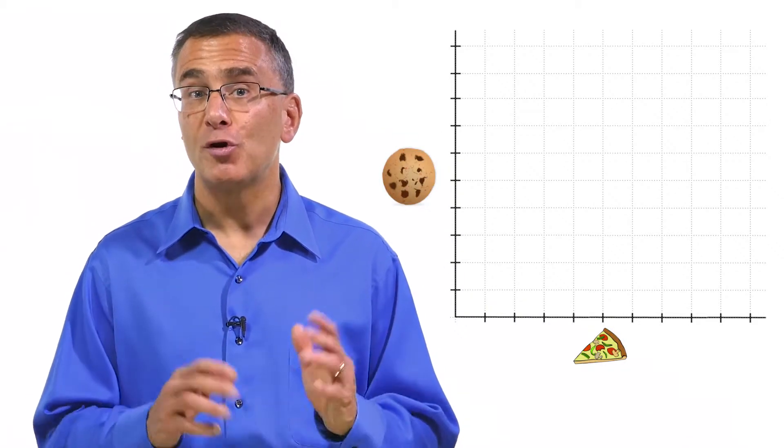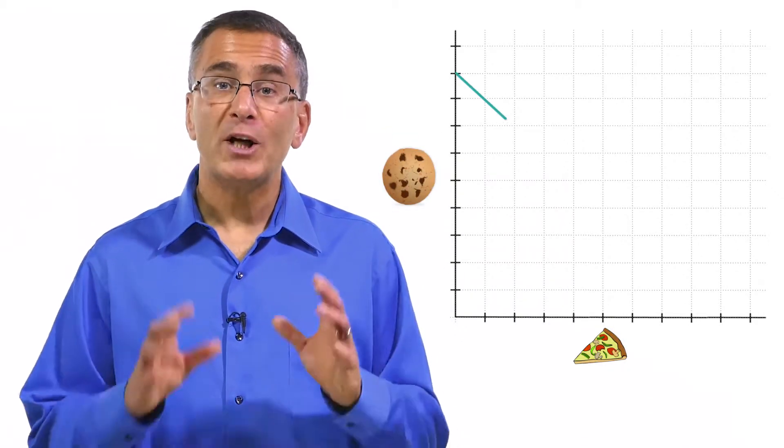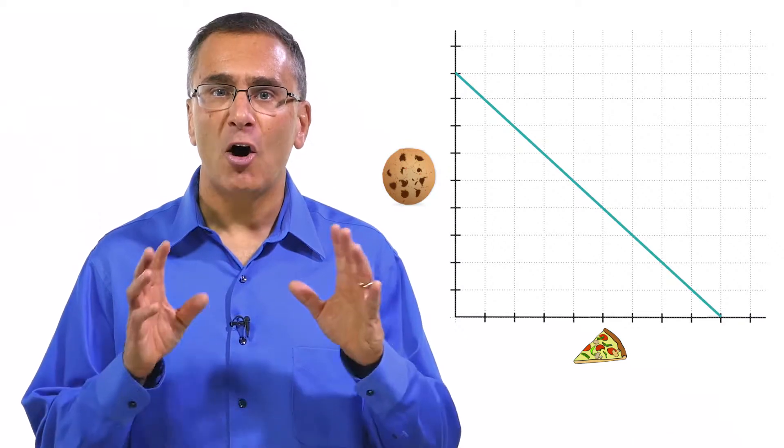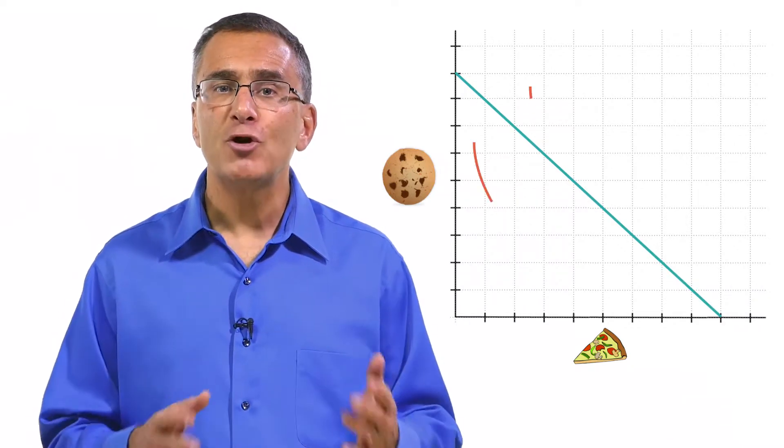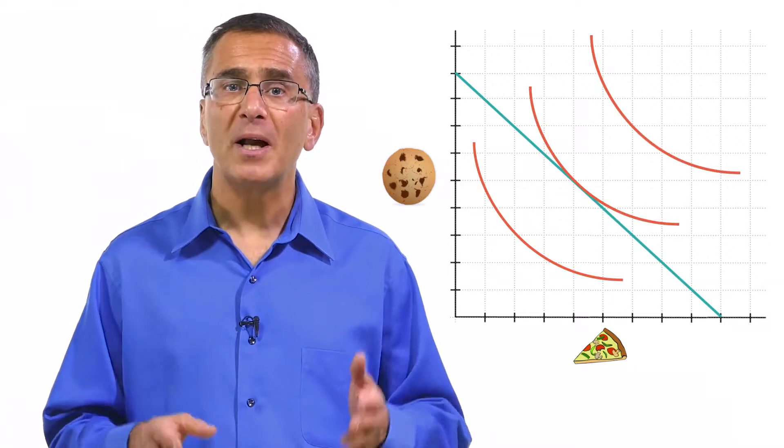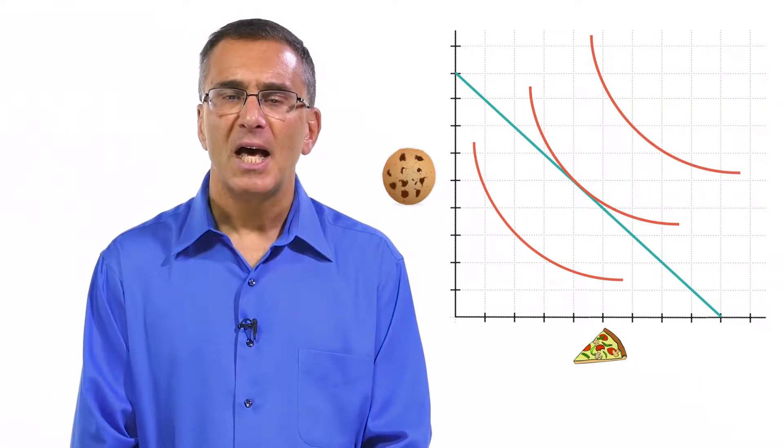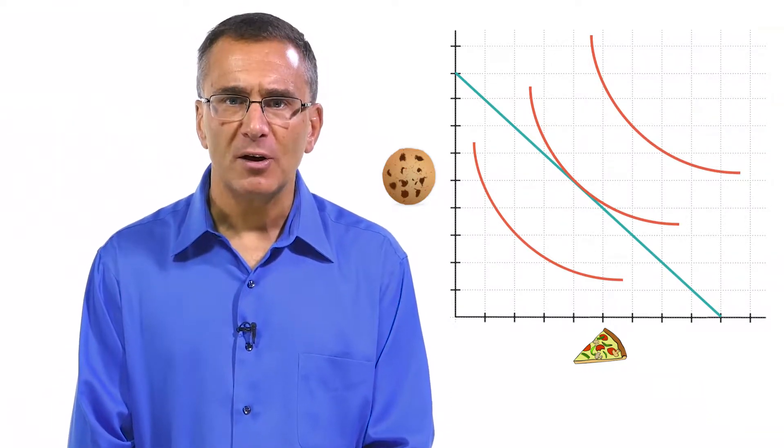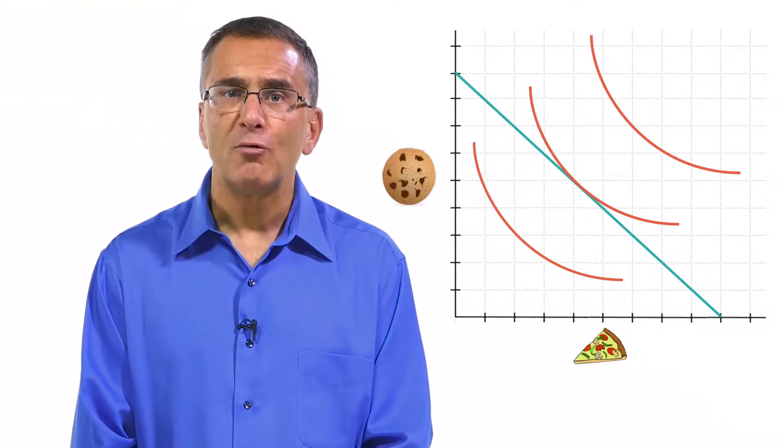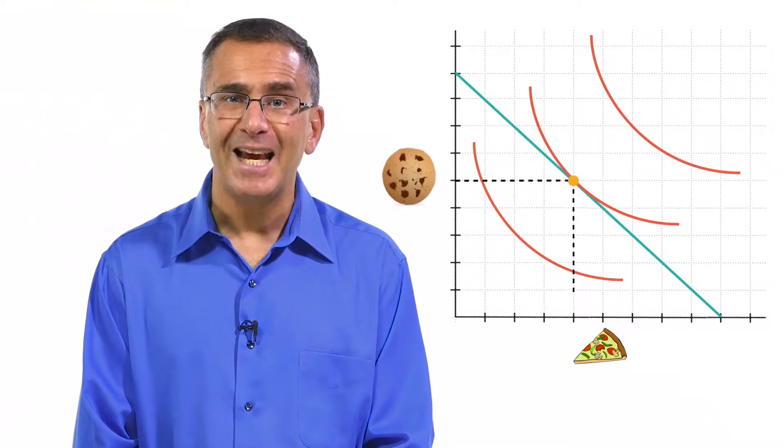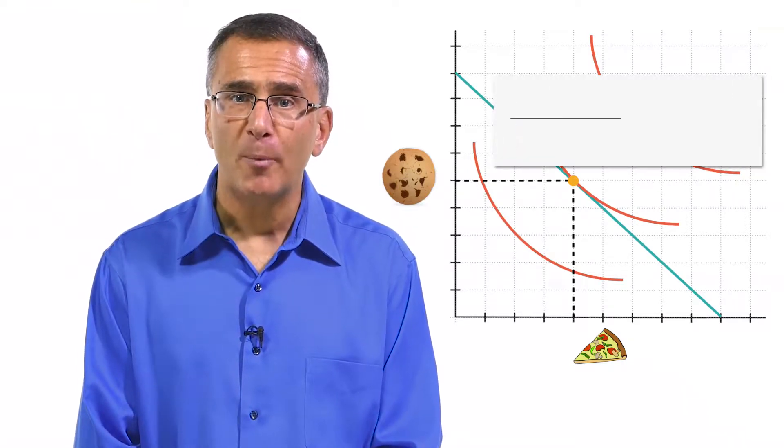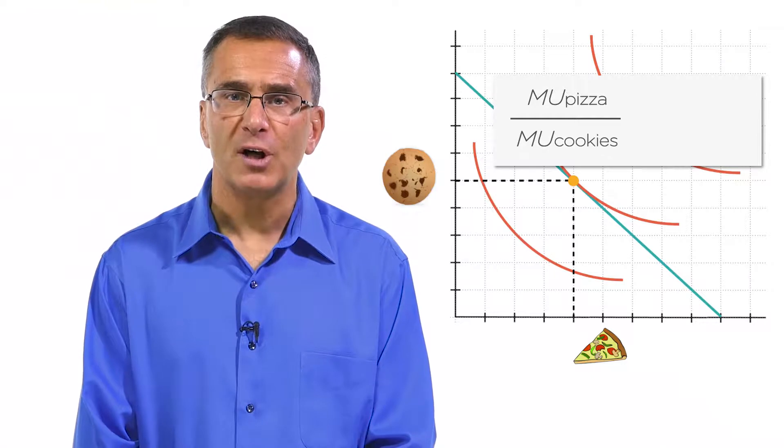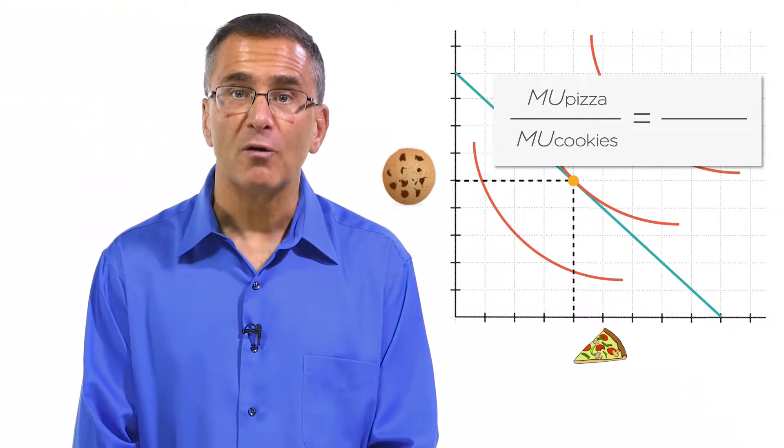Remember how we modeled the trade-off between two goods a few lectures back? We constructed a budget constraint containing all the different combinations of pizza and cookies a consumer could buy. Then we drew in indifference curves corresponding to various levels of utility. And the consumer maximized their utility by choosing the combination of pizza and cookies represented by the point on the budget line tangent to an indifference curve. This is the point at which the ratio of the marginal utility of pizza to the marginal utility of cookies is equal to the price ratio of pizza to cookies.